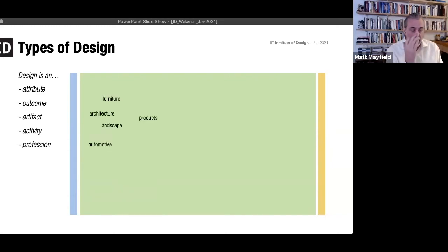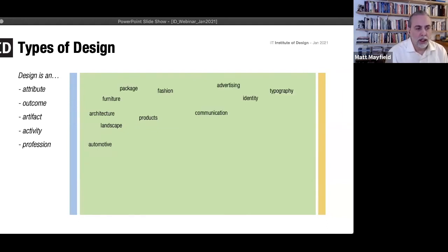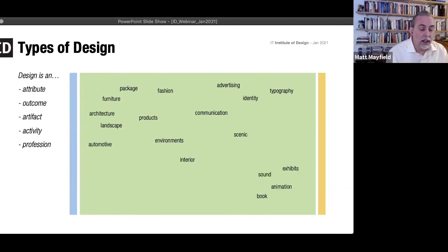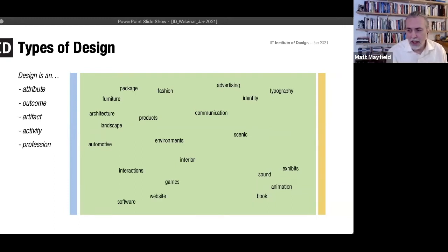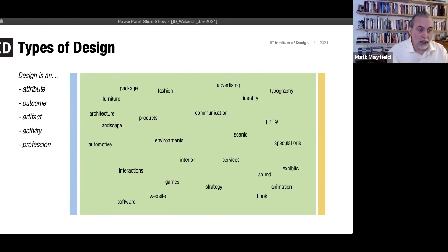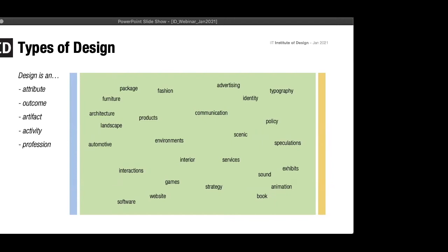If we think about design as outcomes — the production, what comes out of the work of design — all sorts of things pop up: from cars to buildings to furniture and products, fashion, advertising, identity and communications, environments, interior design, scene design, exhibit design. We can go into storytelling, where we're talking about animations, books, and sound. More recently we get into things like interactions, websites, games, and software. We've moved into designing strategies and services, even into policies and the speculation of what the future may be.